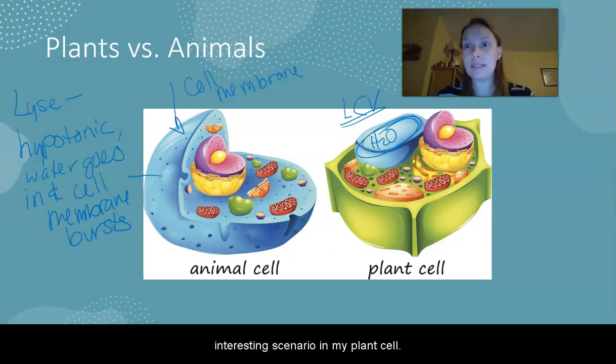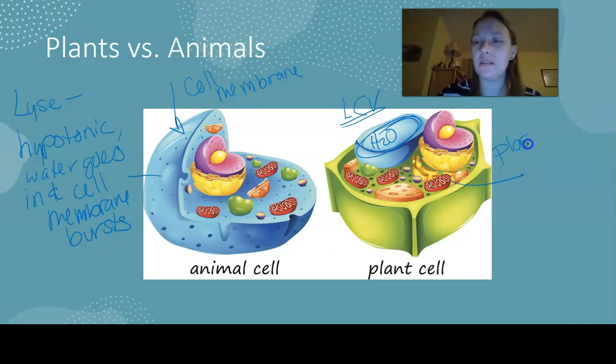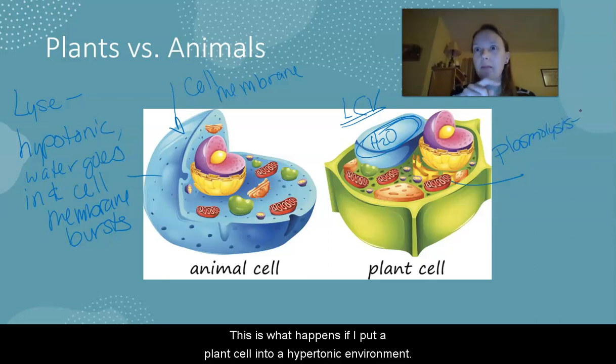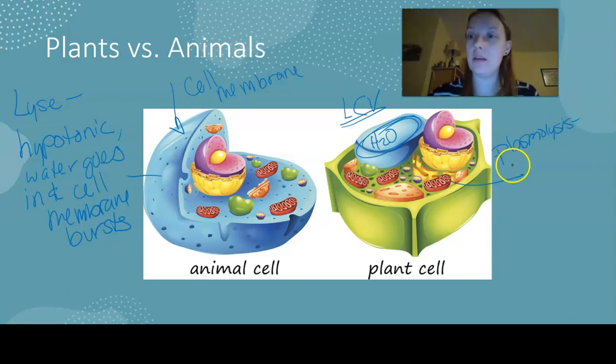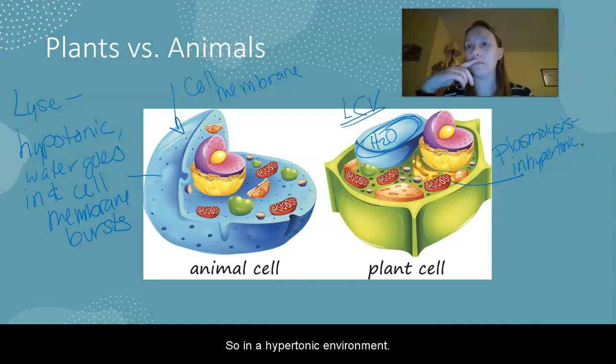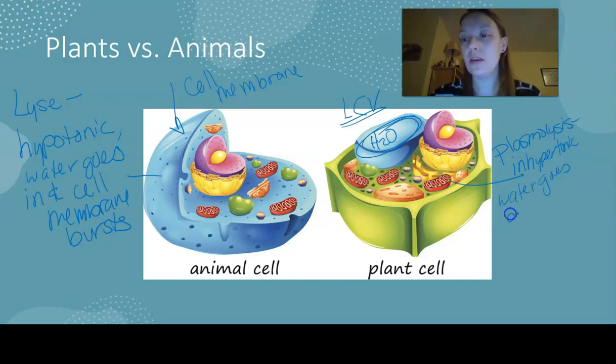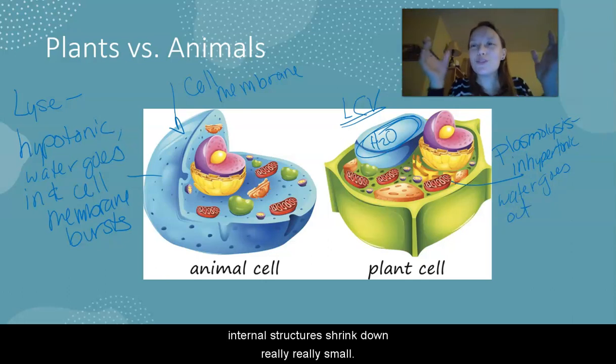Another interesting scenario in my plant cell, I have what's called plasmolysis, and this is what happens if I put a plant cell into a hypertonic environment. So in that hypertonic environment, all that water is going to go out. So that water rushes out, and then you'll see all of that internal structure shrink down really, really small.